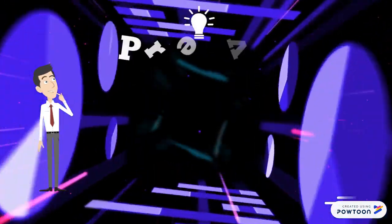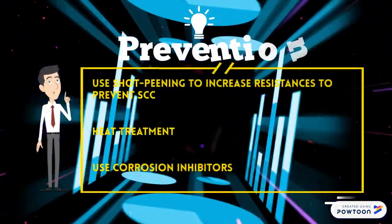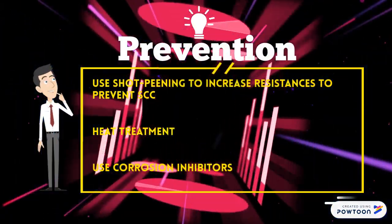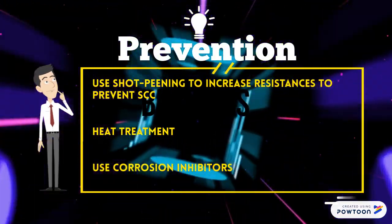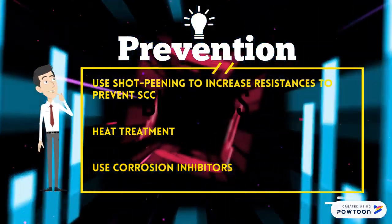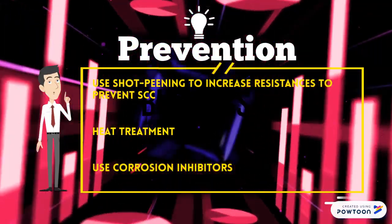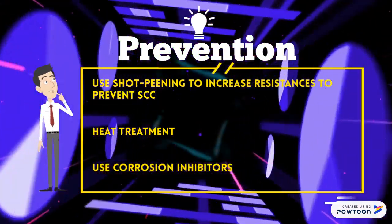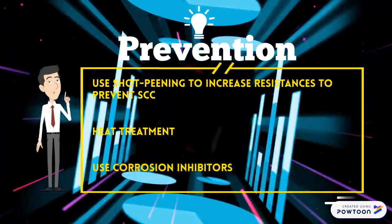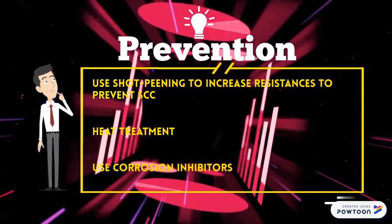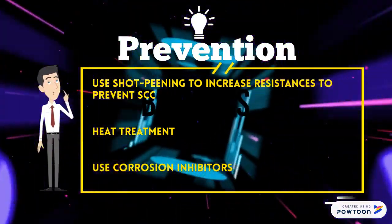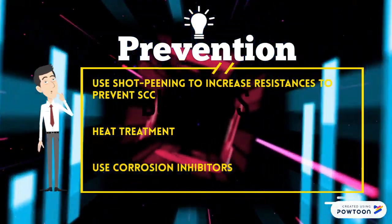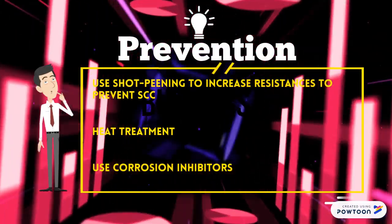Prevention. Use shot peening to increase resistance to prevent stress corrosion cracking. Secondly, we can use heat treatment methods. Third, we can use corrosion inhibitors.